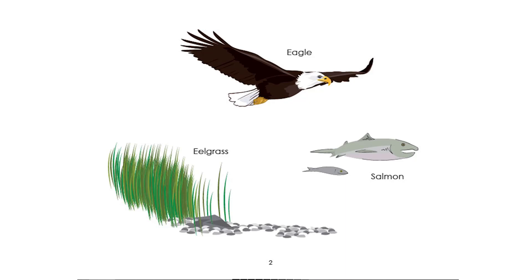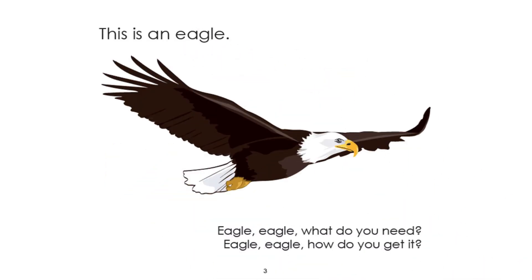Eelgrass, salmon, eagle — those are the names of the two animals and the plant that we're going to be looking at. Turn the page please, Dan. This is an eagle.